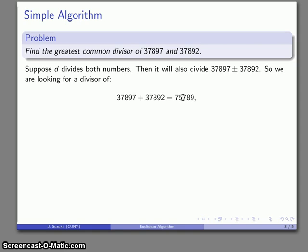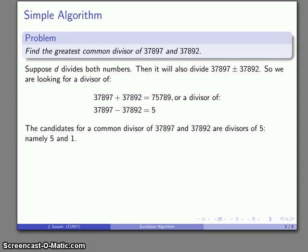Well, maybe that's a more difficult problem. But I could also be looking for something that divides the difference, which is just going to be five. And the nice thing here is there aren't that many possibilities. So the candidates, the things that could be a common divisor, are things that divide five. And the only possibilities I have, five and one.